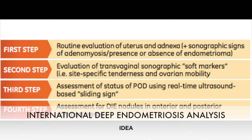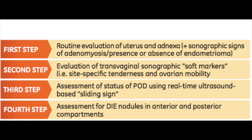The IDEA group has given a four-step method in evaluating endometriotic lesions as well as DIE. The first step is the routine evaluation of the uterus and adnexa, as well as sonographic signs of adenomyosis and the presence or absence of endometrial cysts. During the scan it is also a good idea to evaluate the kidneys for any hydronephrosis or hydroureter that might occur due to an endometriotic lesion not visible on a transvaginal scan.